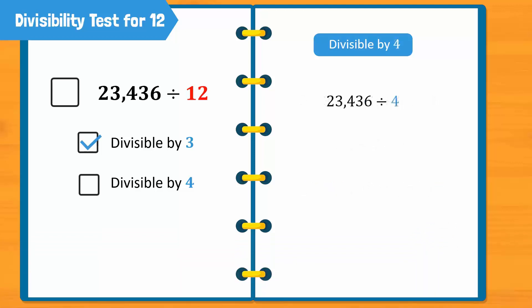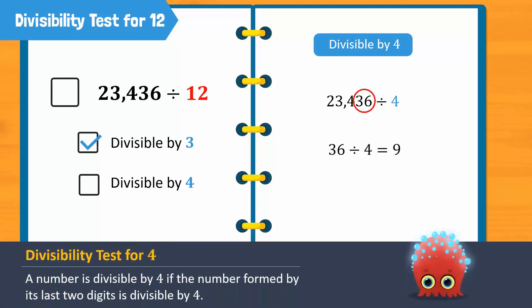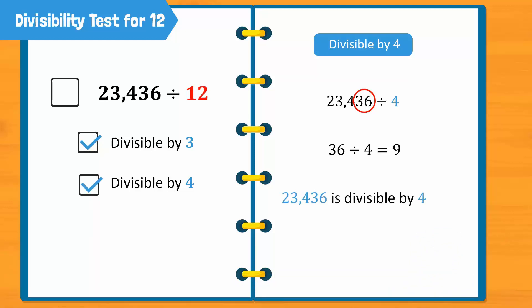Applying the divisibility test of 4, let's check if 23,436 is divisible by 4. We can see that the number formed by the last two digits, 36, is divisible by 4. This means that the original number must also be divisible by 4. Hence, we know that 23,436 is divisible by both 3 and 4. Therefore, it is also divisible by 12. Great!